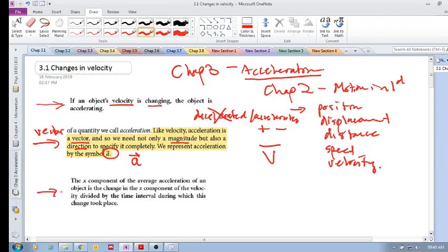Next excerpt: the x component of the average acceleration. So take note here, average acceleration is the change of the x component of the velocity. So it's the change in the velocity divided by the time interval.